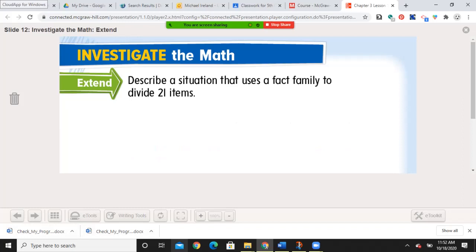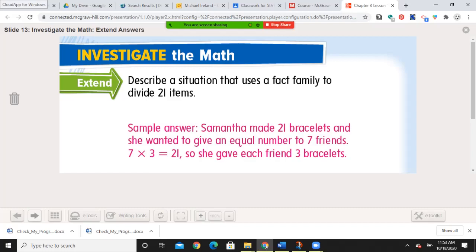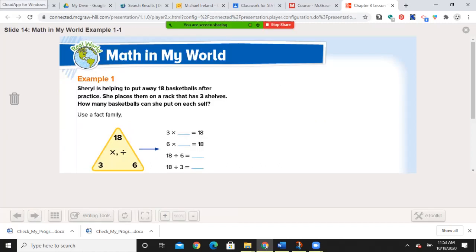Describe a situation that uses the fact family to divide 21 items. Samantha made 21 bracelets, and she wanted to give an equal number to 7 friends. 7 times 3 is 21, so she gave each friend 3 bracelets. Although, in reality, I'm starting with 21, and I would have done 21 divided by 7 to find the 3. But again, they are in the same fact family.